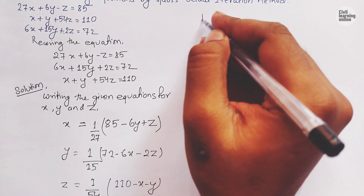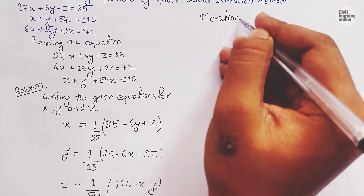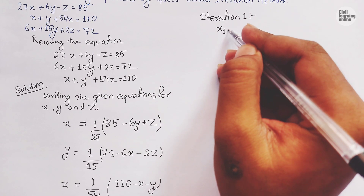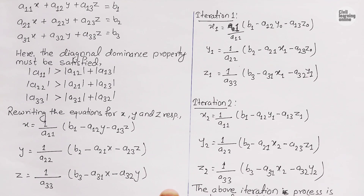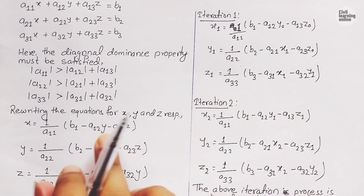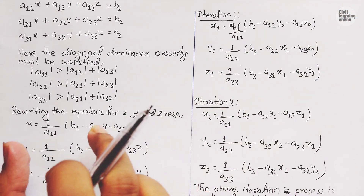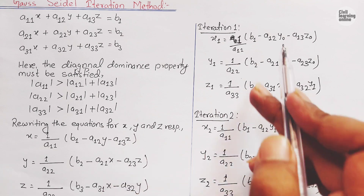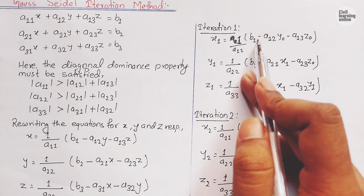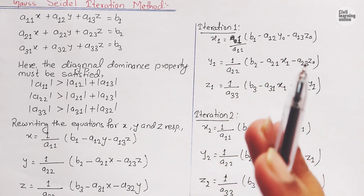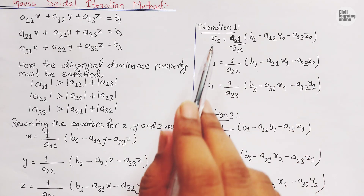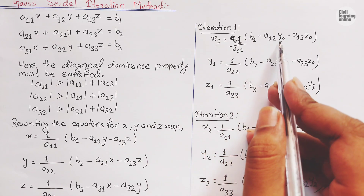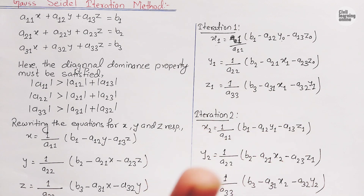For iteration one, we solve for x1. The working rule is: when calculating x1, we need values for y and z. Since no initial values are given, we take y₀ = 0 and z₀ = 0. Always remember - if initial iteration values are not provided in the problem, we start with zero.